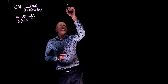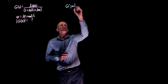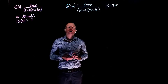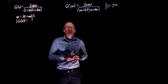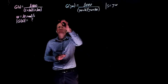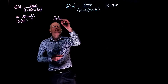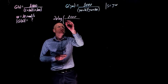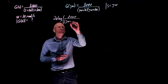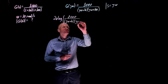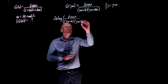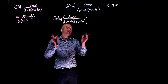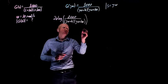We're going to start by replacing s with j omega. Because we're taking the magnitude in decibels, we can simply take 20 log of G of j omega, which will be 20 log of 1000 over (j omega plus 10)(j omega plus 100). This can now be split into three parts, one for each term.